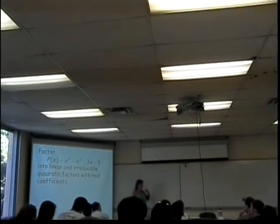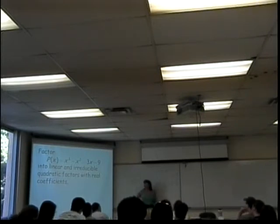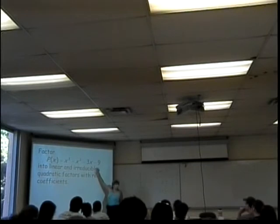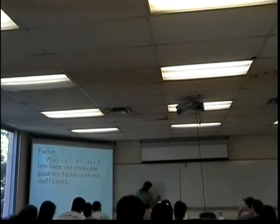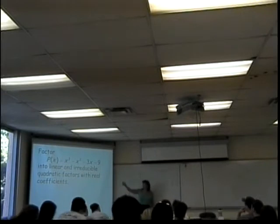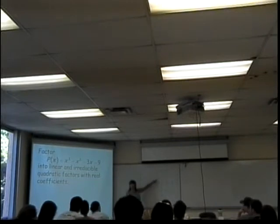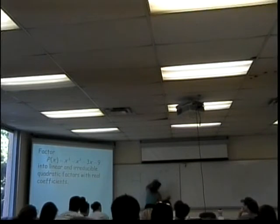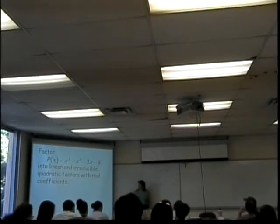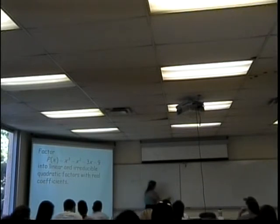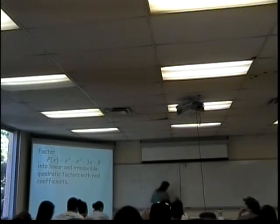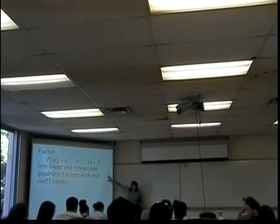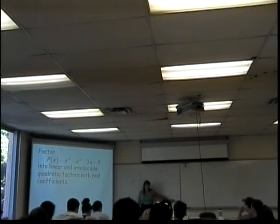Not only did it look good, but it was really, truly one of those. And so then I'm left with x squared plus 2x plus 3. This problem just tells me to factor the polynomial. The linear factor is x minus 3, because it's x minus my zero. My irreducible quadratic factor is x squared plus 2x plus 3. So all this is asking me to do is produce these two factors.